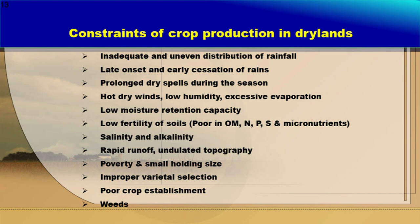Low moisture retention capacity — soils are generally light in texture and cannot store much moisture. Low fertility of soils, salinity and alkalinity are issues under arid and semi-arid climates, with large portions of soils being salt-affected. Rapid runoff occurs due to mostly light-texture soils and undulated topography. Poverty and small holding size are socio-economic issues. Improper variety selection, poor crop establishment, and weeds are crop management-related constraints with no efficient management by farmers.